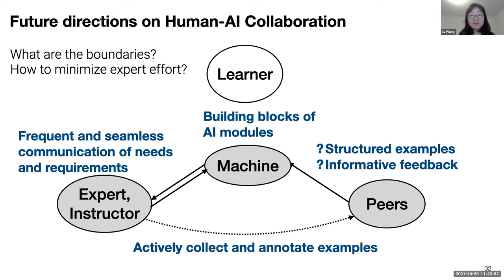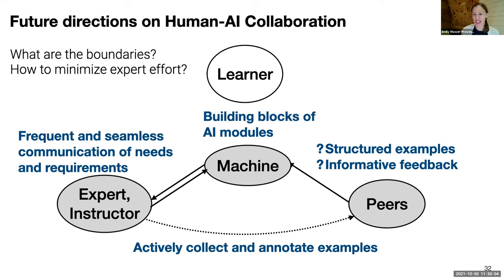That's all for my talk. Thank you, everyone. We have time for one quick question. I love the idea of creating this interactive content. I'm curious how you think about ambiguity in this context — in domains where there might not be definitive right or wrong answers, how do you think about designing questions that capture this gray area?